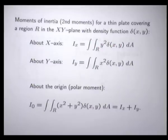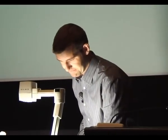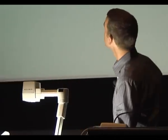There's also the so-called polar moment, or the second moment about origin, which is just the sum of the two integrals, i sub x and i sub y. All right, so let's look at an example.